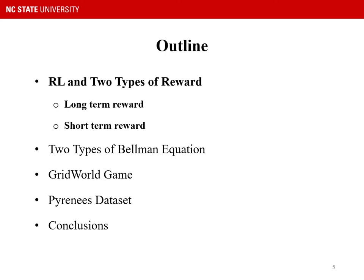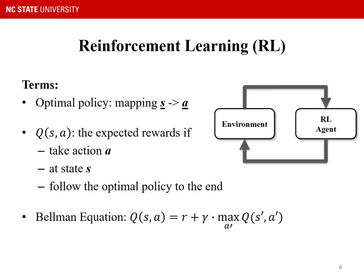This is the outline of my talk. I will start with reinforcement learning and two types of rewards. Reinforcement learning is a type of machine learning technique that learns from the agent-environment interaction process. At any moment, the agent observes the environment state S, then it takes an action A, receives a reward R, and the environment state evolves into the next state S'. In reinforcement learning, the optimal policy is a mapping from state to action, which uses Q values to determine the best action to take for any given state. Q values are defined as the expected rewards if the agent takes action A at state S and follows the optimal policy to the end.